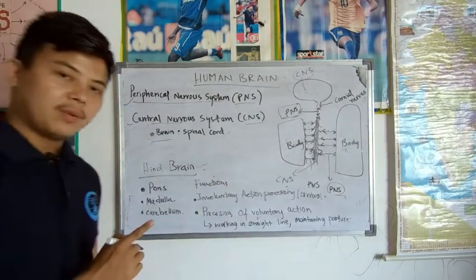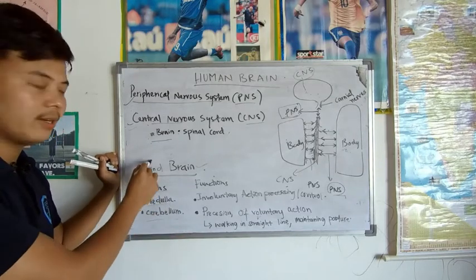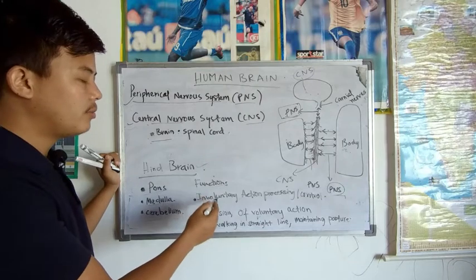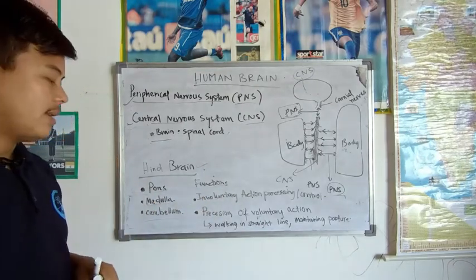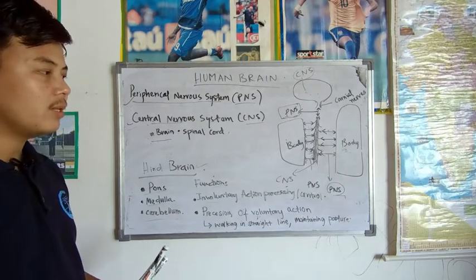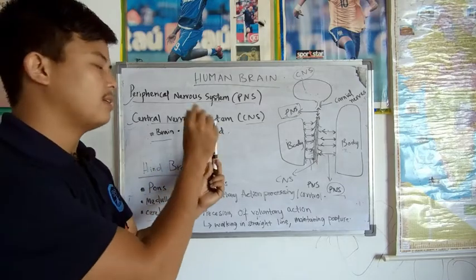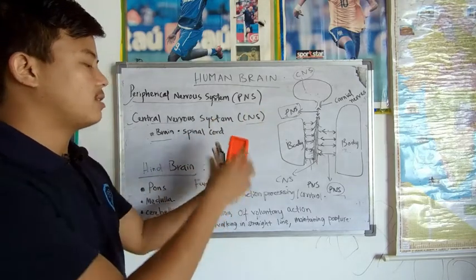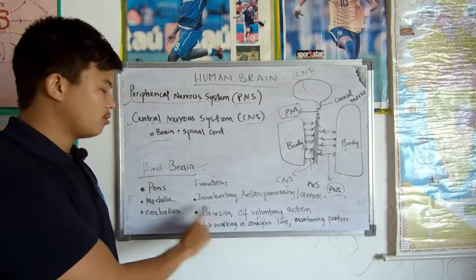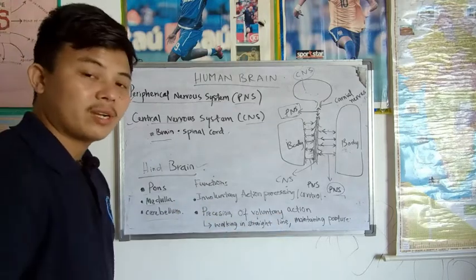The third part of the brain is the hindbrain. The hindbrain consists of the pons, medulla, and cerebellum. The functions of the hindbrain include processing both involuntary and voluntary actions. It also handles precision — for example, when picking up a small object like a marker, the size of your hand adjusts to match the object's size. This precision processing of voluntary actions is done in the hindbrain.